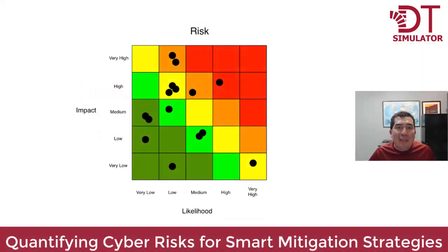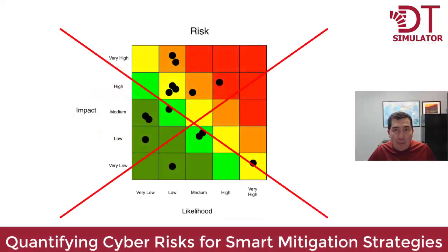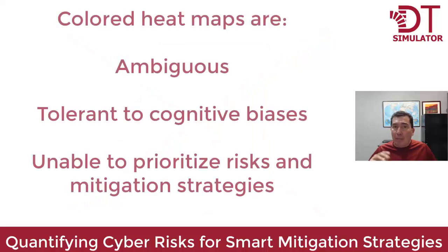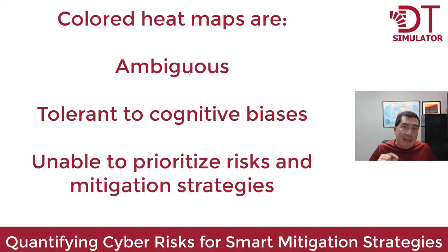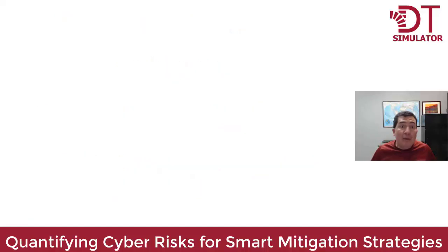Forget about colored heat maps for quantifying cyber risks. Among many weaknesses, they are ambiguous, tolerant to cognitive biases, and unable to prioritize the relative importance of risks and their mitigation strategies.